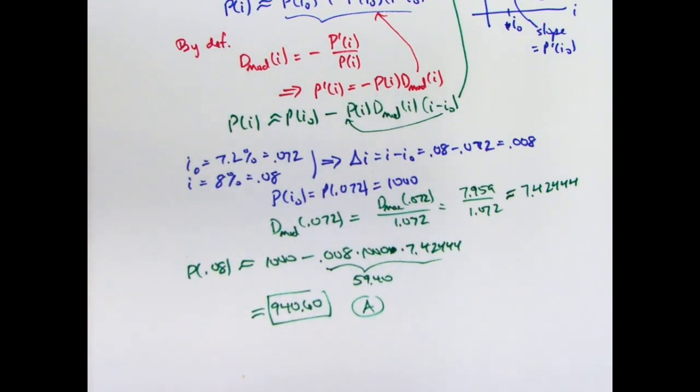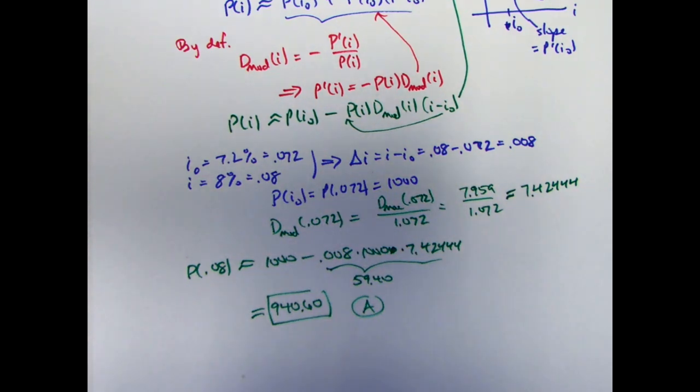And it's pretty interesting, that's a pretty big price drop from 1,000 to 940.60. So if going interest rates on these kinds of bonds went up from 7.2% to 8% for the yield rate, that's quite a loss right away. That would be, you know, if you were talking dollars, that would be a $59.40 loss right away if you tried to resell it. So again, modified duration. We use the first order approximation in this video.